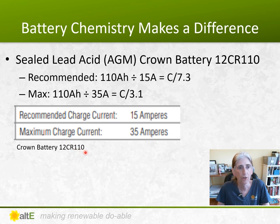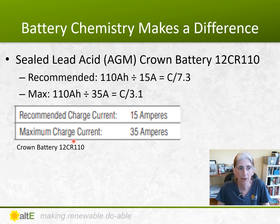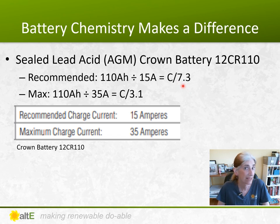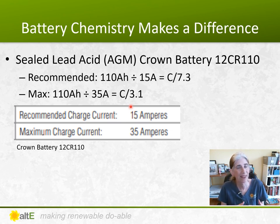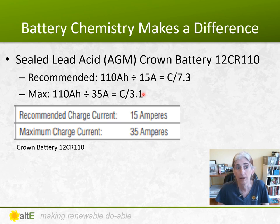Looking at a different brand and type — a sealed lead acid battery from Crown — they list both a maximum and a recommended rate. The maximum is 35 amps, but the recommended is less than half of that at 15 amps, around a C7.3. As a maximum, you can do a C3.1. When designing a system, you can aim for the recommended rate for the healthiest battery, or push closer to the maximum.